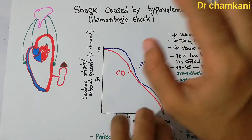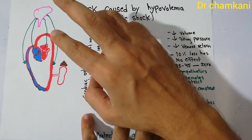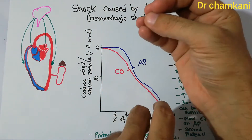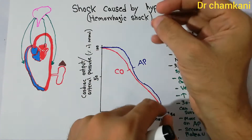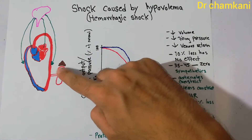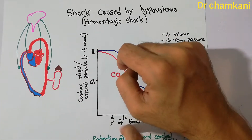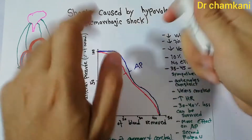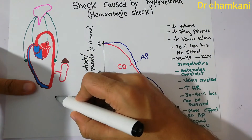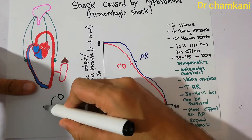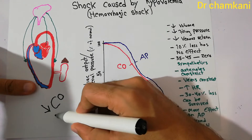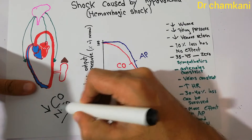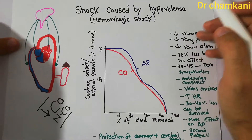When there is decreased supply of blood, oxygen, or other nutrients to the body tissues — to the extent that the demand of the organs and tissues cannot be fulfilled — that condition is called shock. Shock can occur either with normal cardiac output or with low cardiac output, and there are different types and stages of shock.